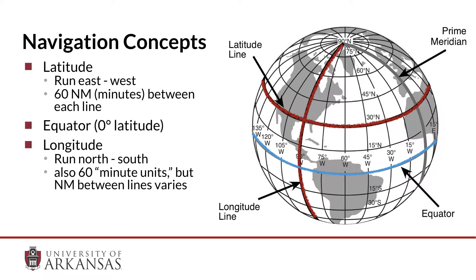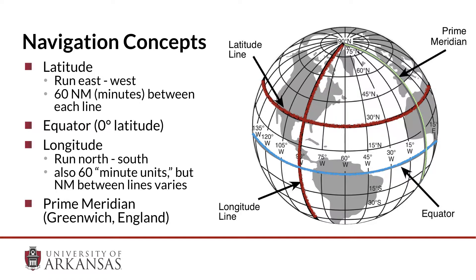Zero degrees longitude is a line that runs through Greenwich, England, and is referred to as the prime meridian — this is ground zero for time zones. In aviation, we use Zulu time, which was previously referred to as Greenwich Mean Time. The reason for this is all aviators use the same time, regardless of time zone. All weather products and NOTAMs are in GMT or Zulu time.